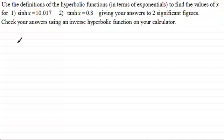So for the first one if we have to solve sinh of x equals 10.017 then to do this you're just using exponentials. What we do is we write down what sinh of x is in exponentials and by definition it's e to the power x minus e to the power minus x all divided by 2 and this will equal then 10.017.